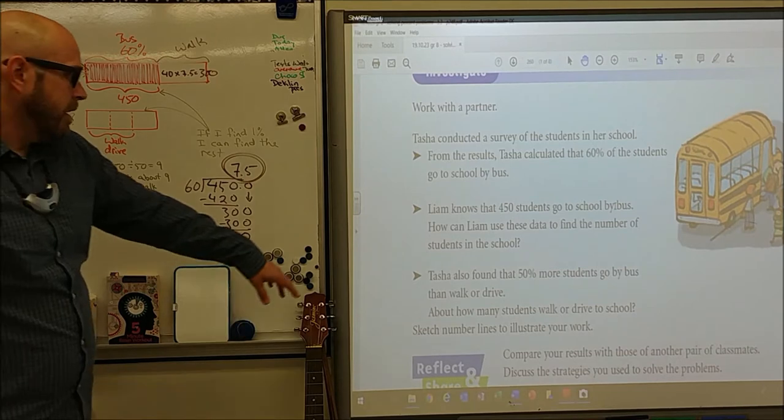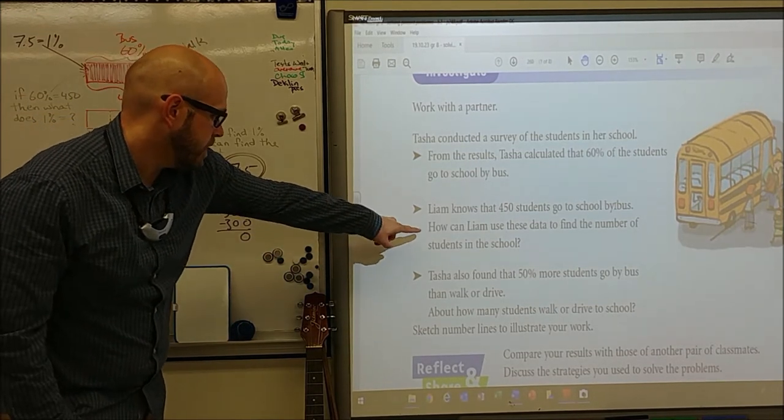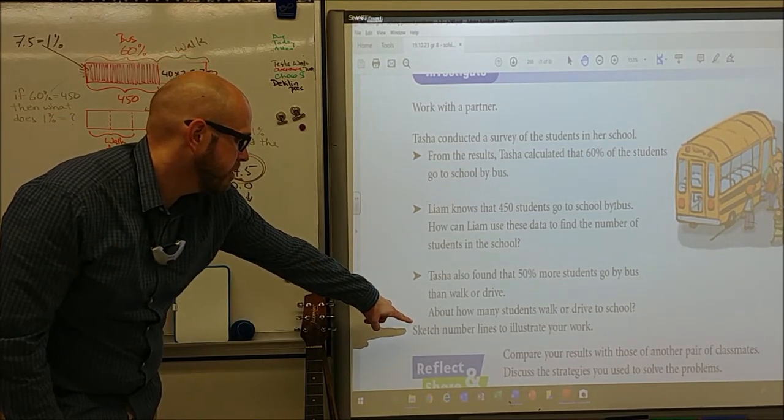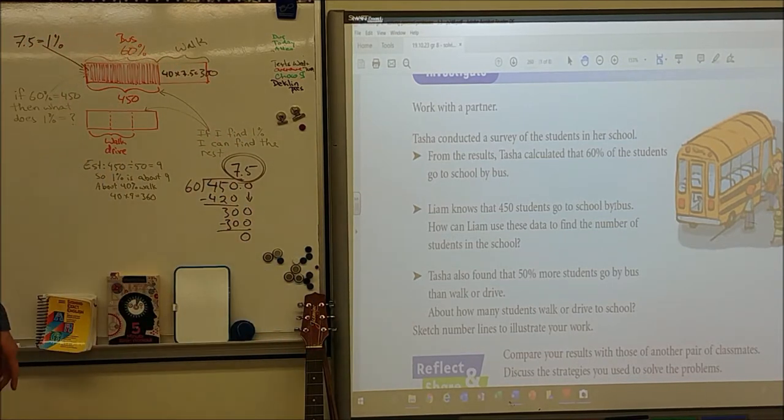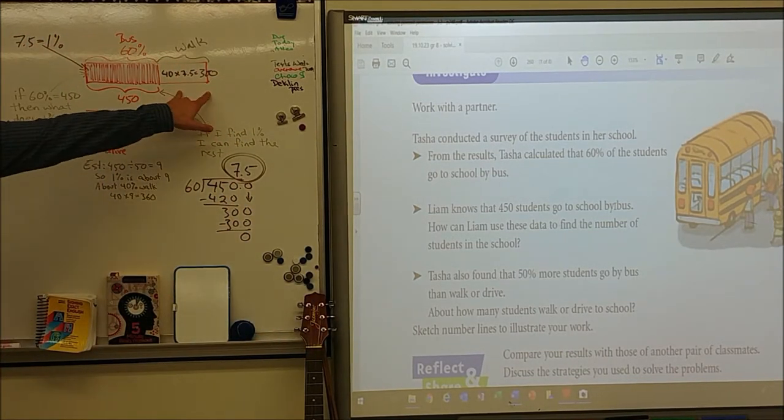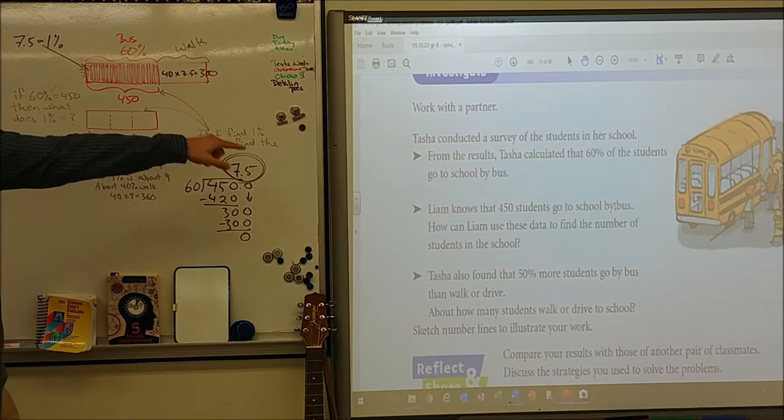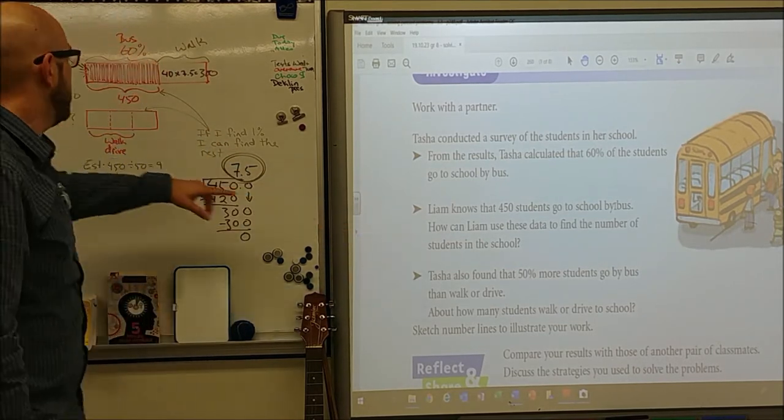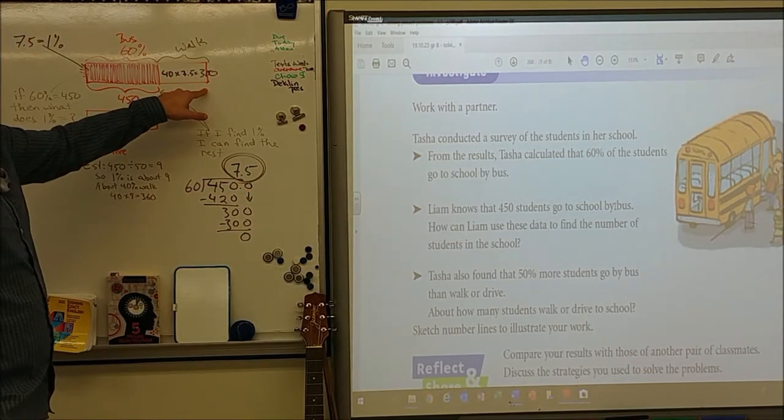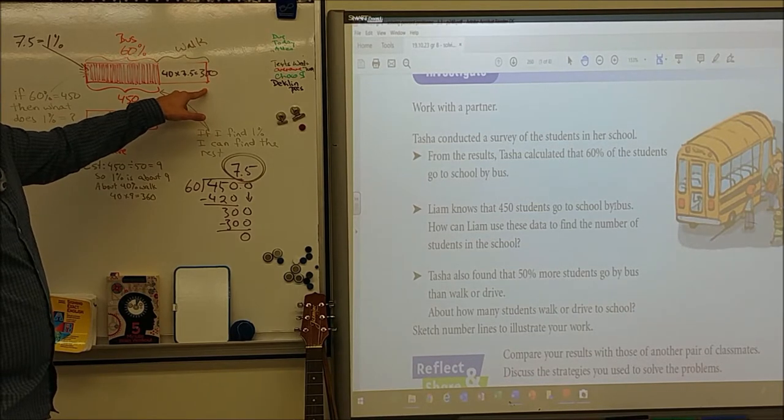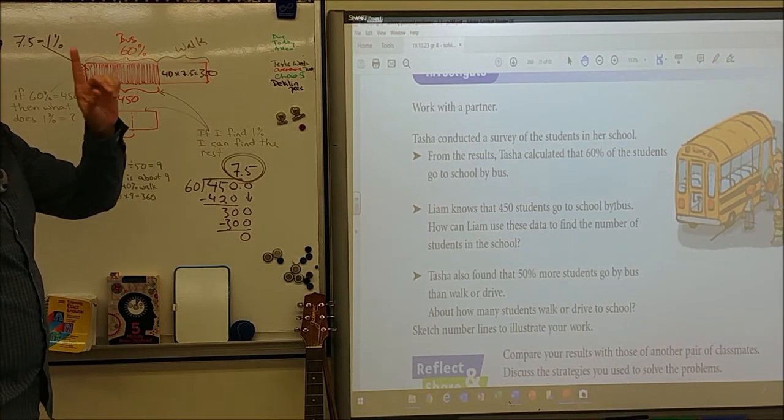So we've answered part of it. It said, find total number of students. It said how many kids walk. How many kids walk or drive? Well, we know 450 drive. Then we know 300 walk. And then this kid wants to know how many kids in the school. Well, 450 plus 300, 750 kids. Bottom line, how did you find a percent?